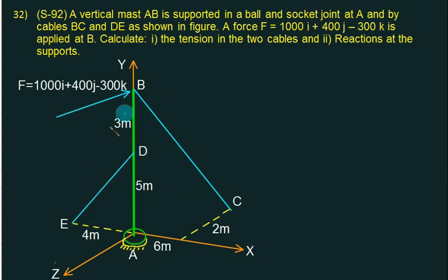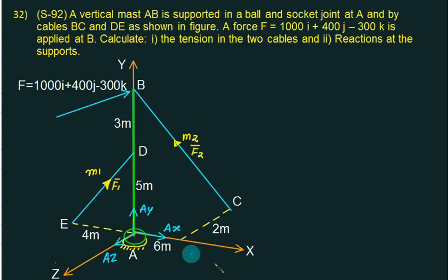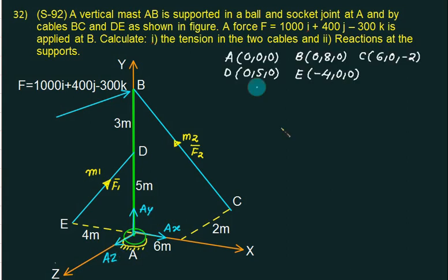This problem is a non-concurrent force system, so we use two equations: sigma F equal to zero and sigma M equal to zero. The reactions at the ball-and-socket joint at A are Ax, Ay, Az — three unknowns. The reaction vector is Ax i plus Ay j plus Az k. Coordinates: A is (0,0,0), B is (0,8,0), C is (6,0,minus2), D is (0,5,0), E is (minus4,0,0).